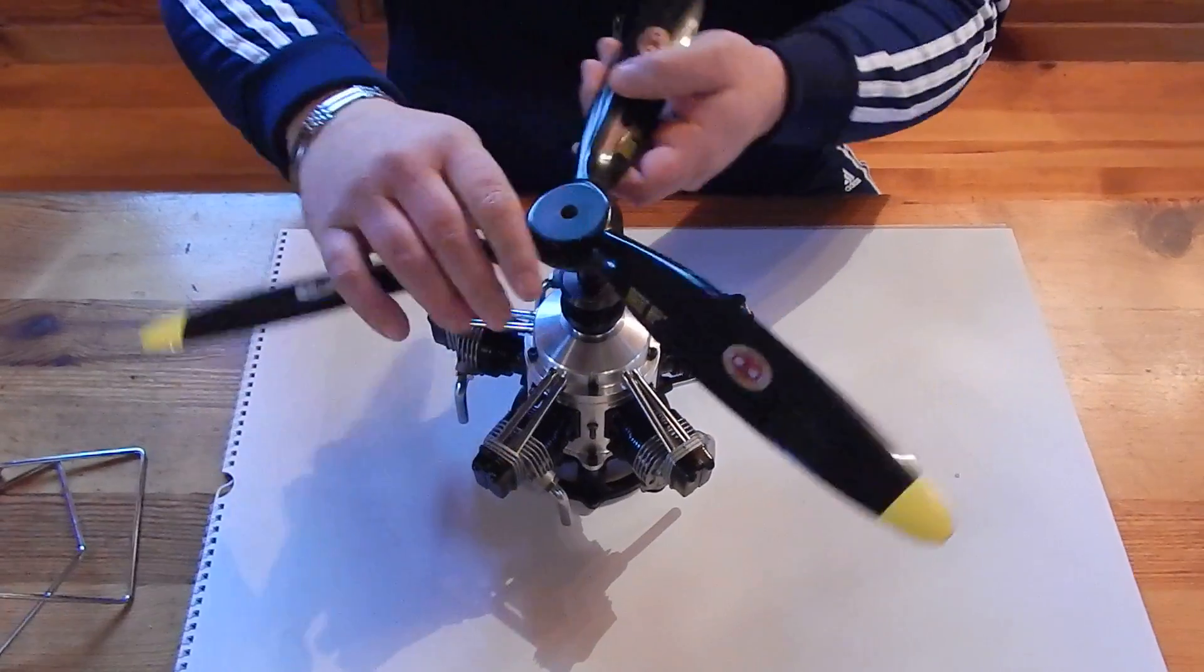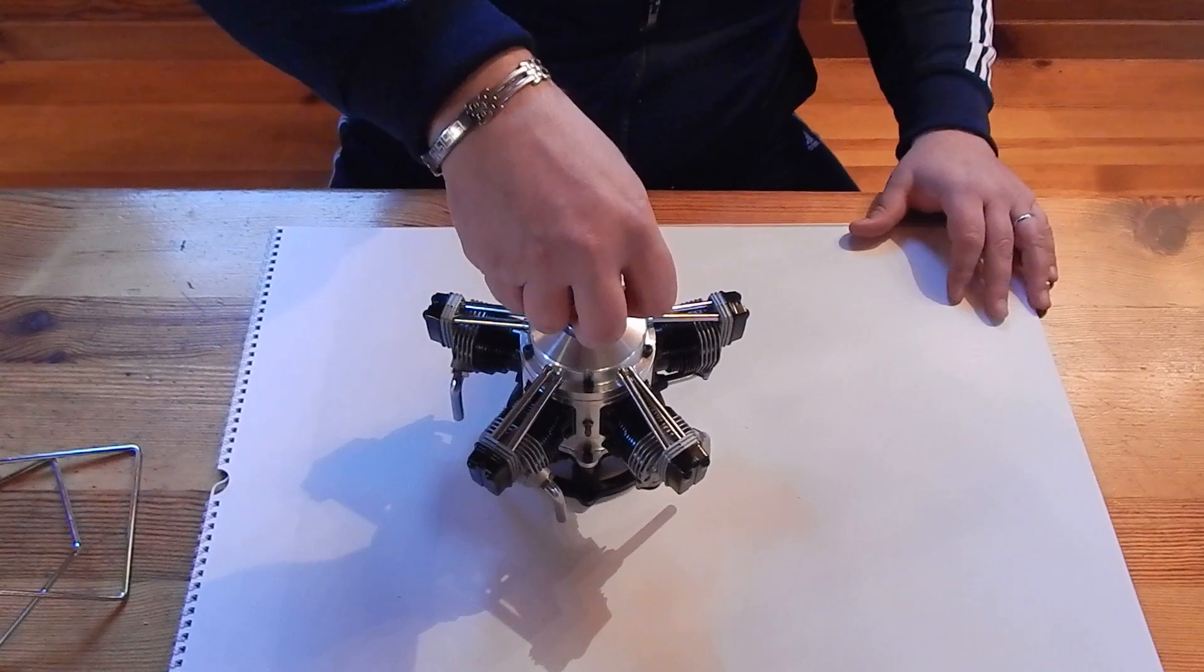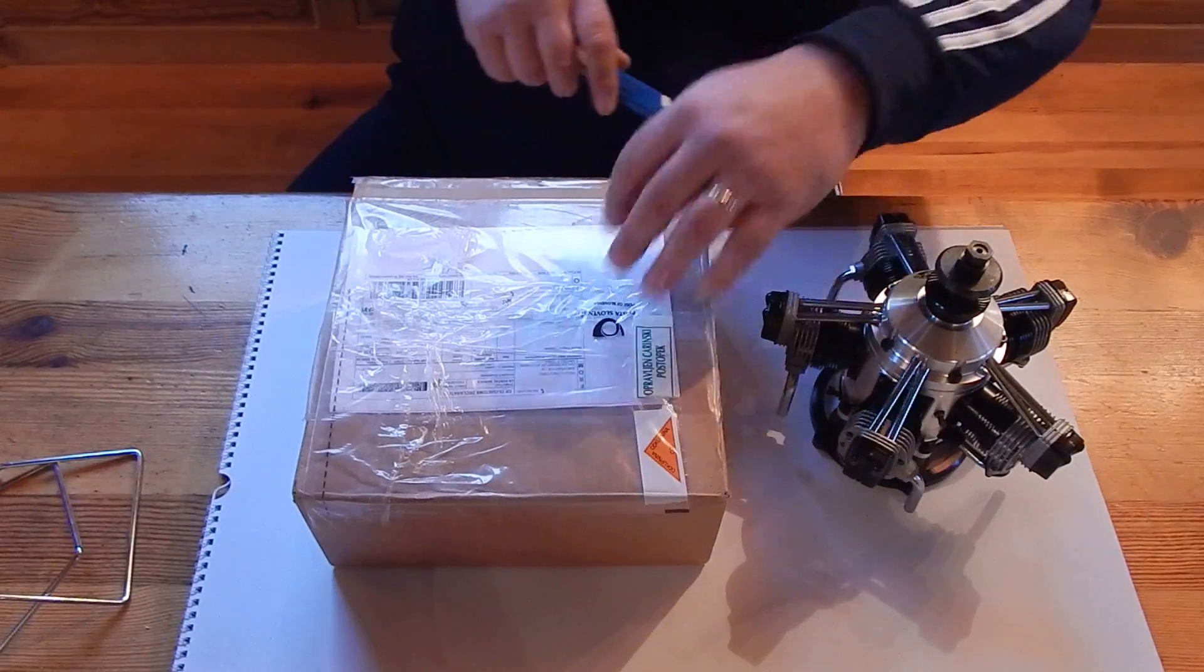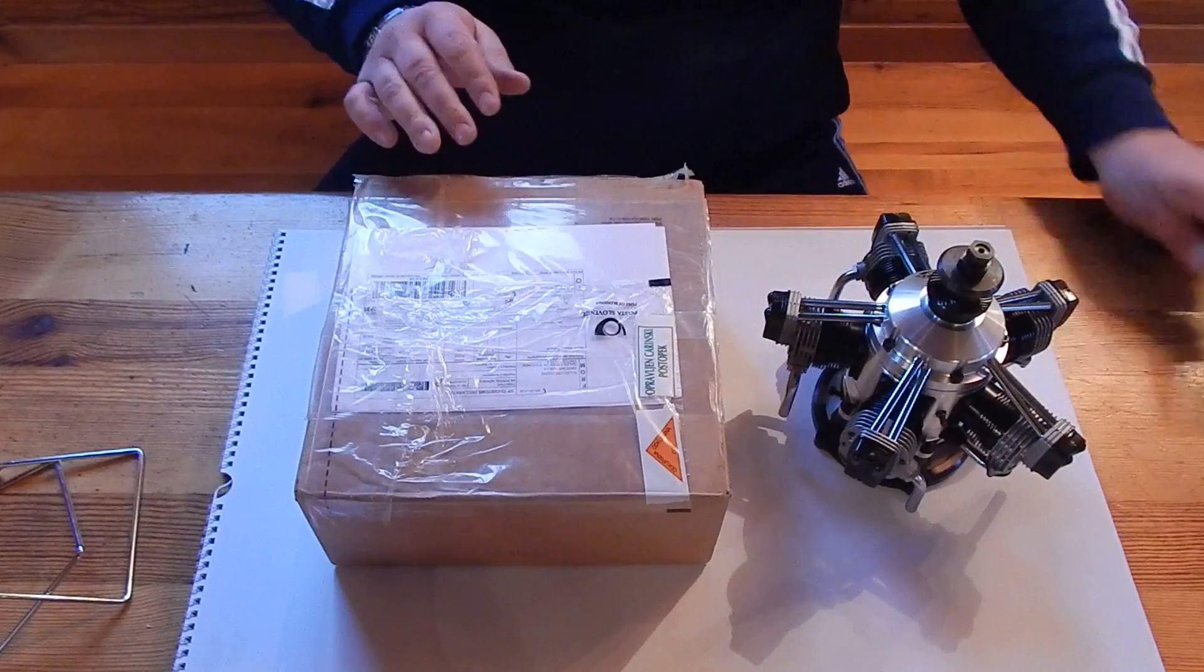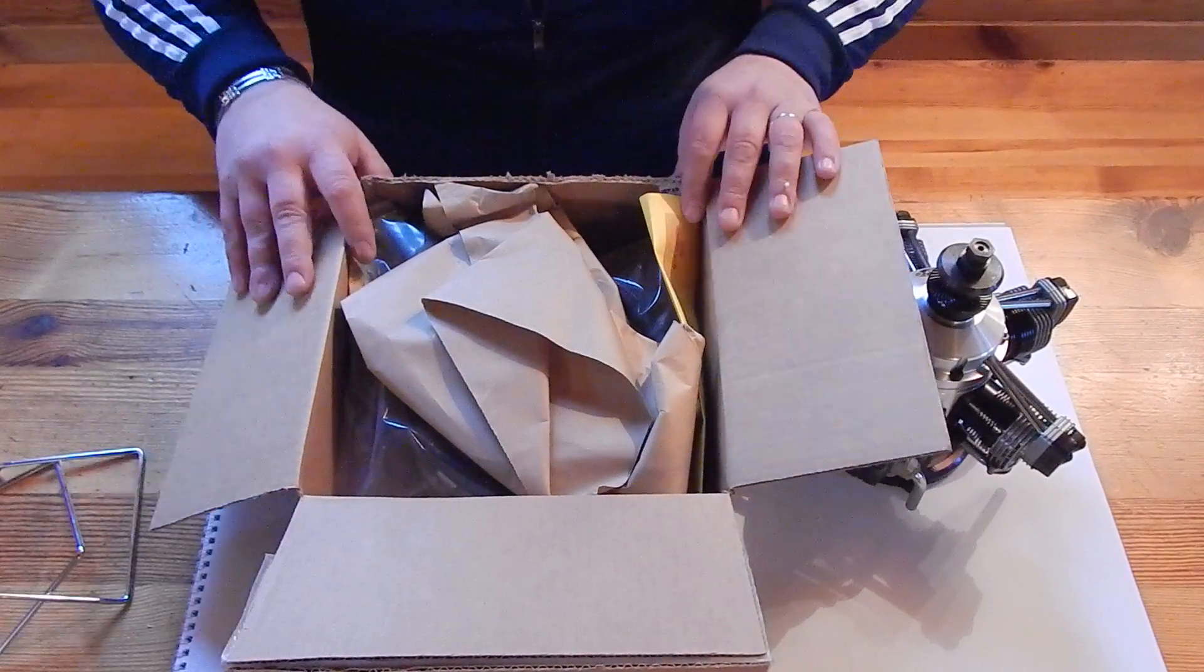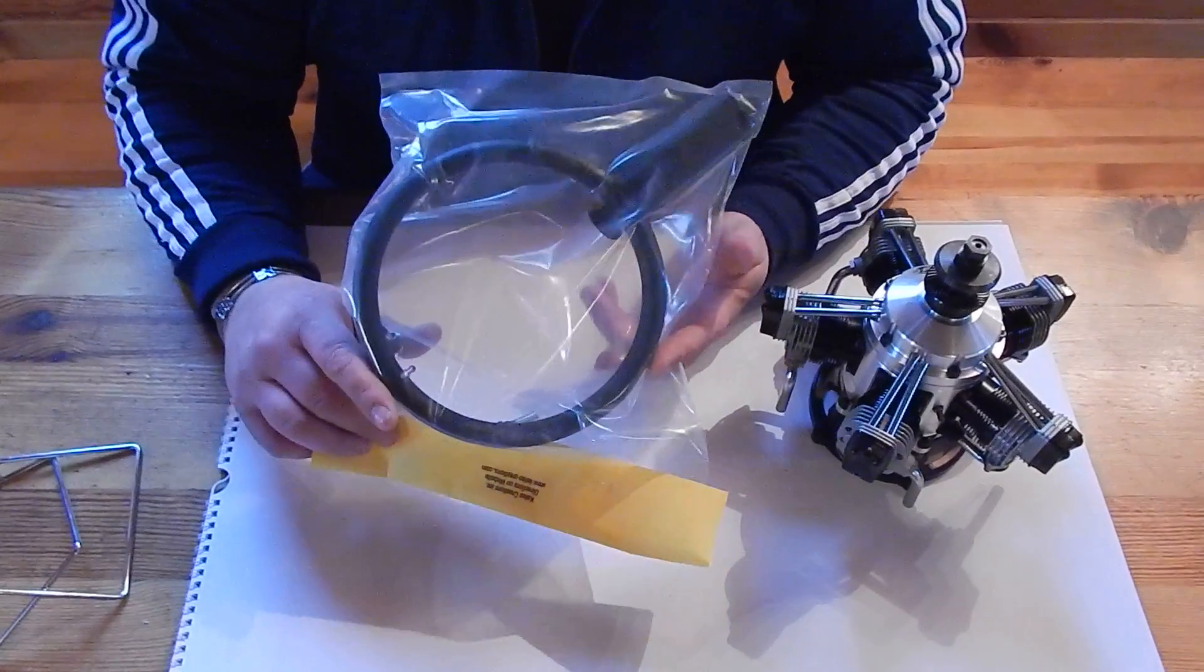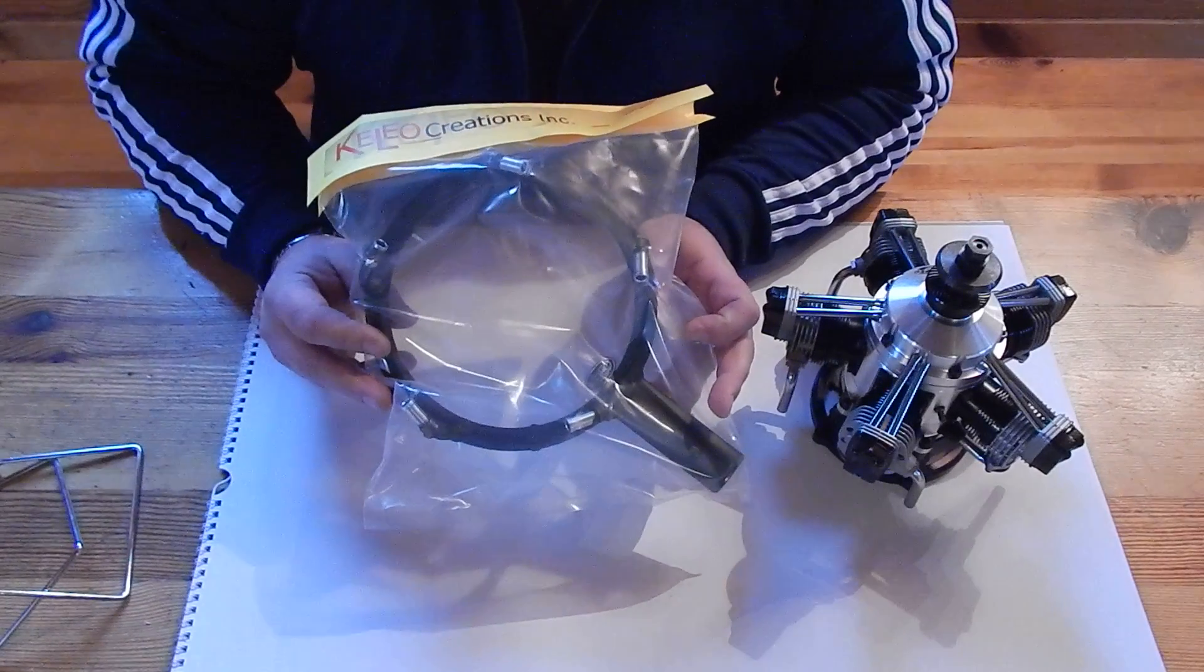And now for my crucial ingredient that I've been telling about. Let me put this to the side. I will show you. This is what I got from Texas USA. Everyone who's been familiar with this engine probably knows what's inside. It's an original Kaleo exhaust system for ASP five-cylinder glow engine.